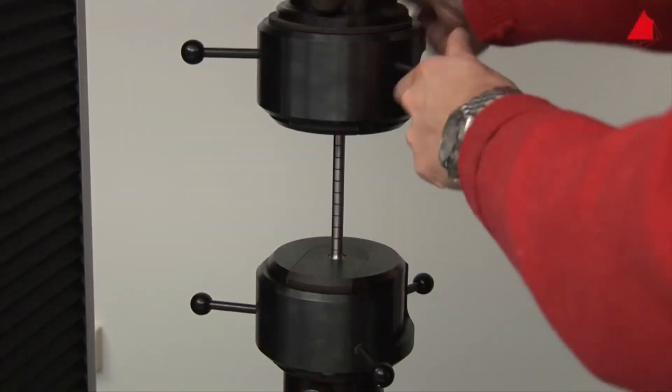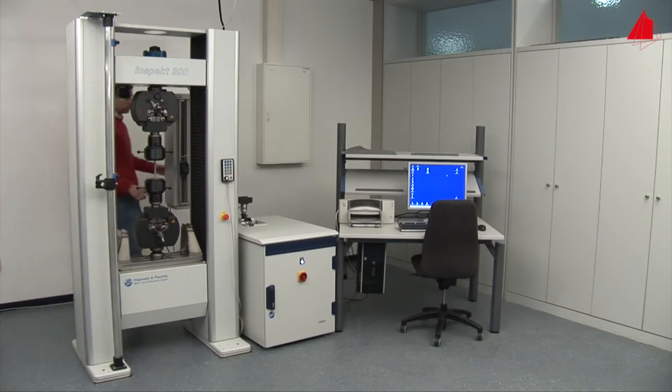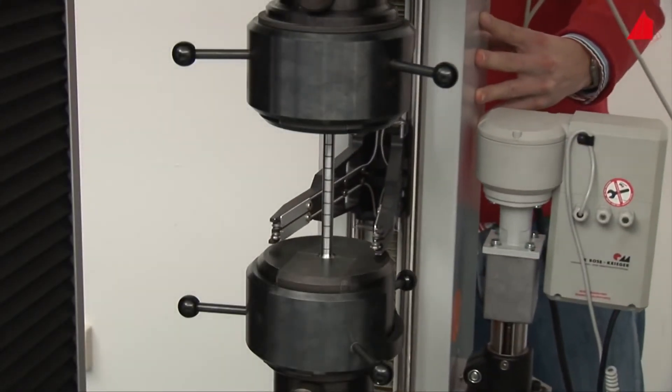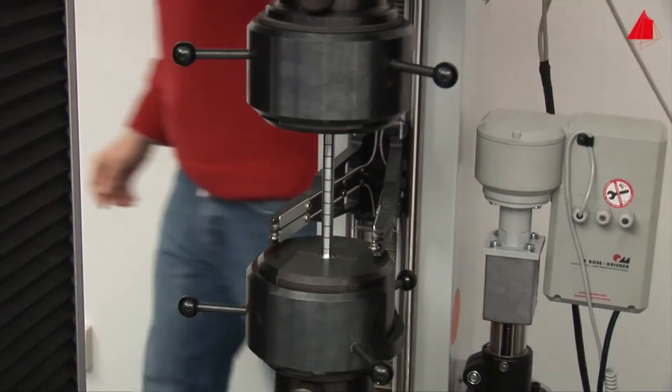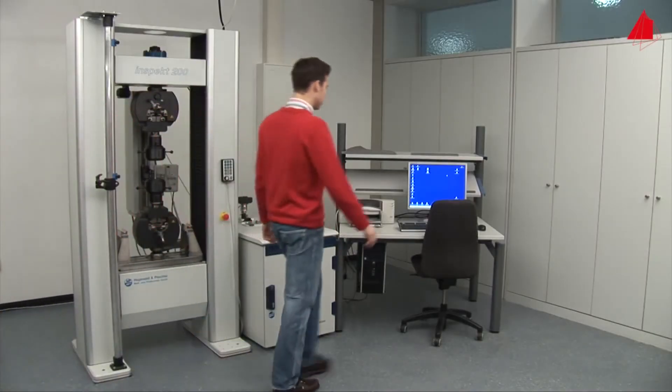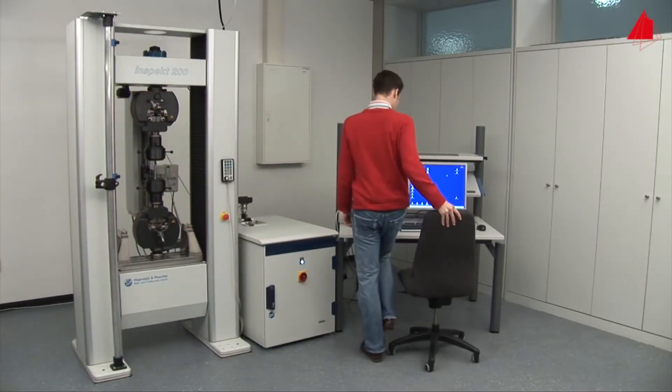In the next step, he swings the extensometer into its working position and checks that everything is correctly prepared. Then he selects all necessary testing parameters on the control computer.